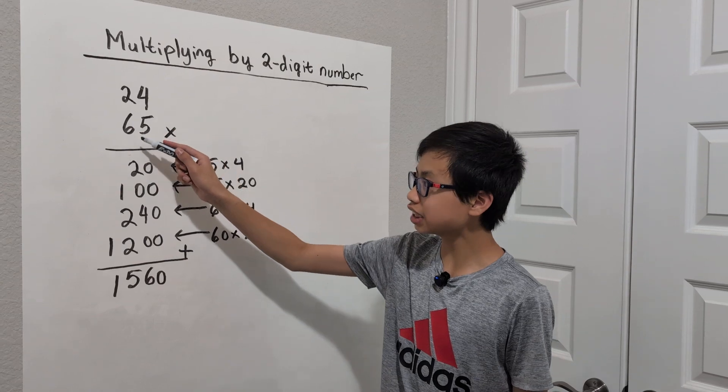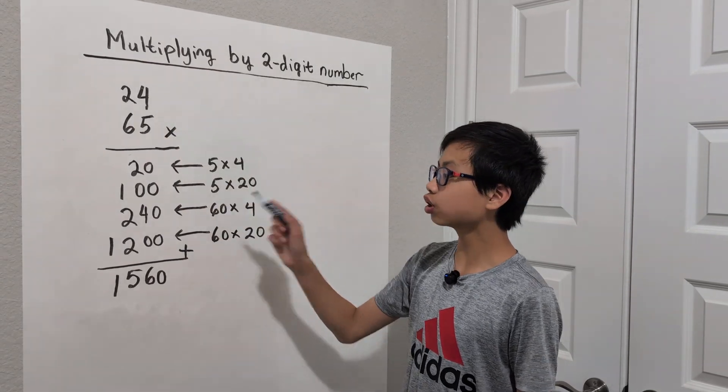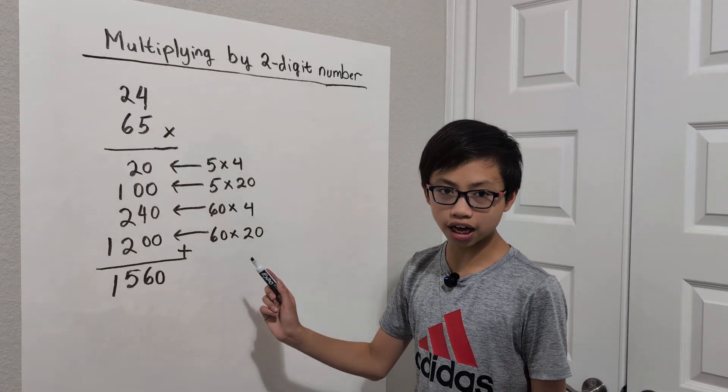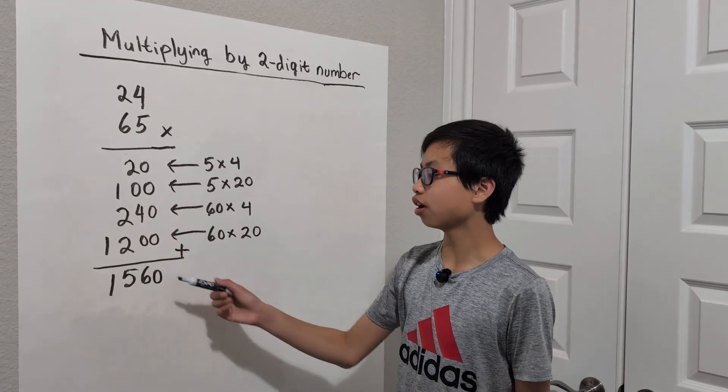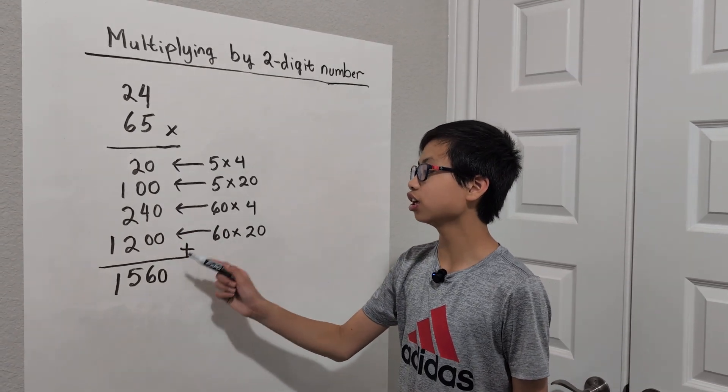And then after that, we're going to do 60 times 20 is equal to 1200. And then after that, we're going to add all the numbers up to get a total of 1560.